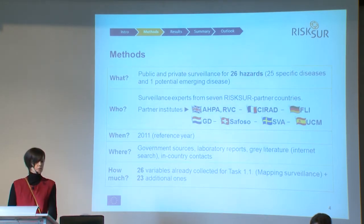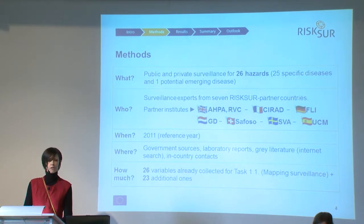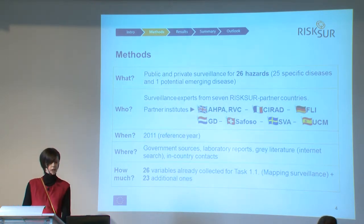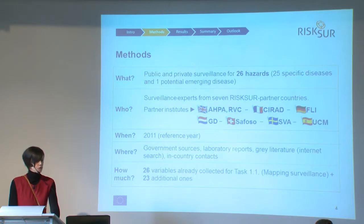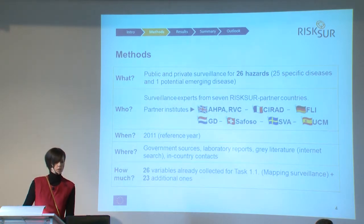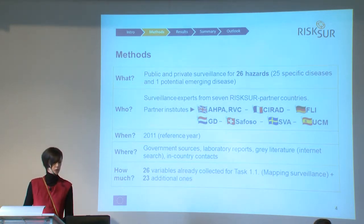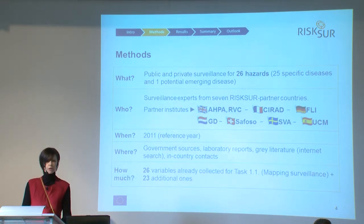The search has been restricted to 26 hazards that were selected because they were present in Europe in the last 10 years, had available surveillance data in the investigated countries, and could have been potential case studies for any of the RISC-SUR work packages. Data was collected by the same surveillance partners and referred to the year 2011, resulting in 26 variables already collected for the previous task and 23 additional ones.